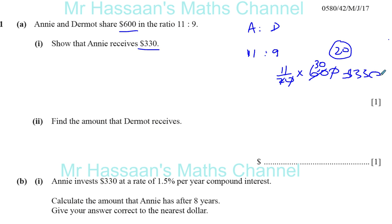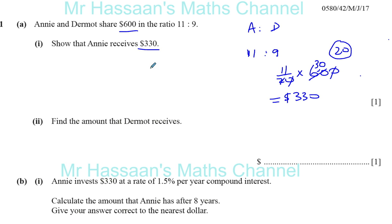So if you show this step — that's equal to $330 — they're looking for this step: 11 over 20 times 600. That's very important. You can't just write the answer down and do that in your calculator. You have to show your steps, especially when they have already given you the answer. Don't expect to get any marks if you just write down 330.